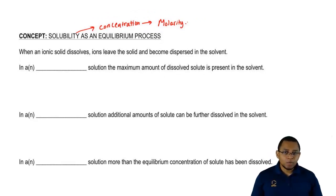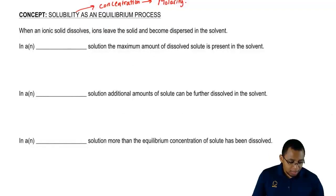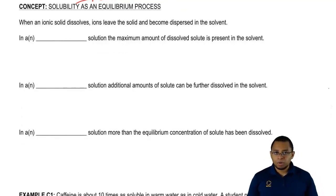When we dissolve a solid, ions are going to leave that solid and dissolve within the solvent. What we should realize is that there's a threshold, a limit to how much solute we can dissolve. After a certain point, we can try to add more and more solid, but none of it's going to dissolve because the liquid has reached its maximum amount of dissolving. There are different terms we need to be familiar with.